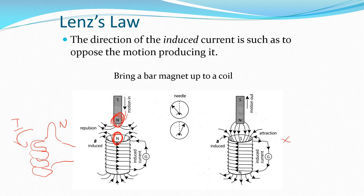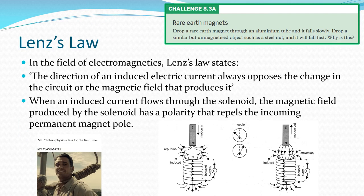That's essentially what Lenz's Law is. It's counterintuitive, but it makes sense from a conservation of energy point of view. In electromagnetics, Lenz's Law tells us the direction of an induced electric current always opposes the change in circuit or the magnetic field that produces it.